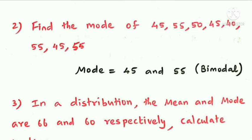For the second dataset: 55, 50, 45, 40, 55, 45, and 55. The mode is the value of the variable which occurs most frequently. Here 55 occurs most, so mode = 55.